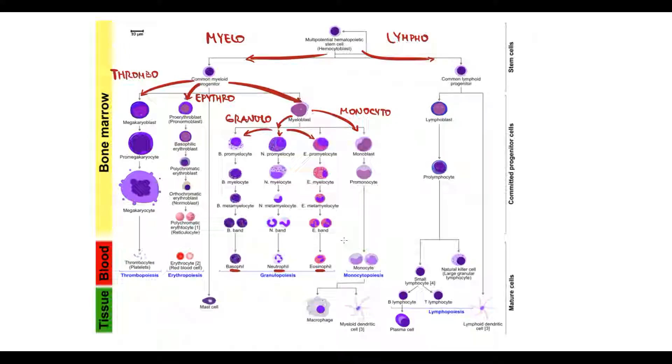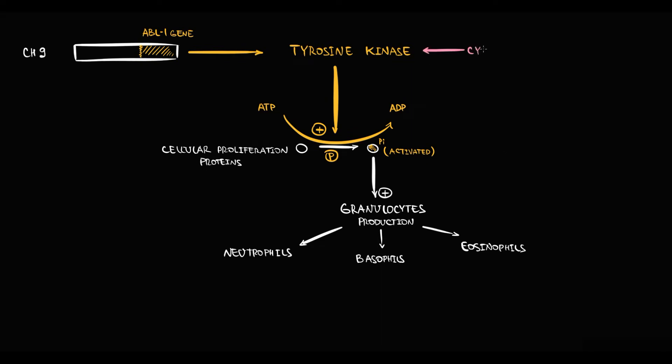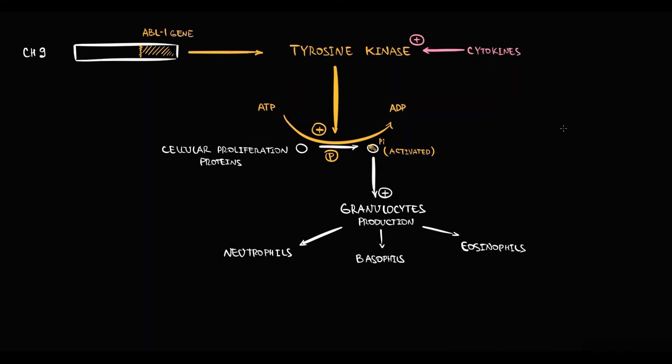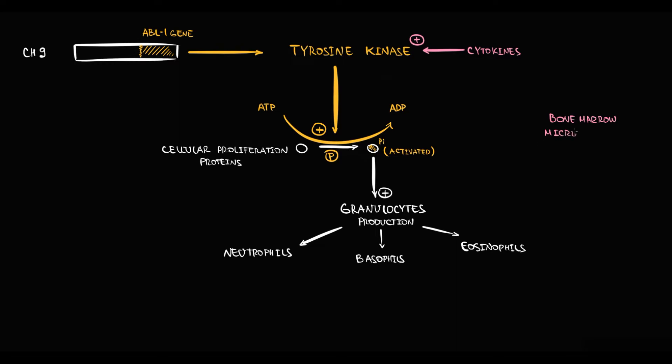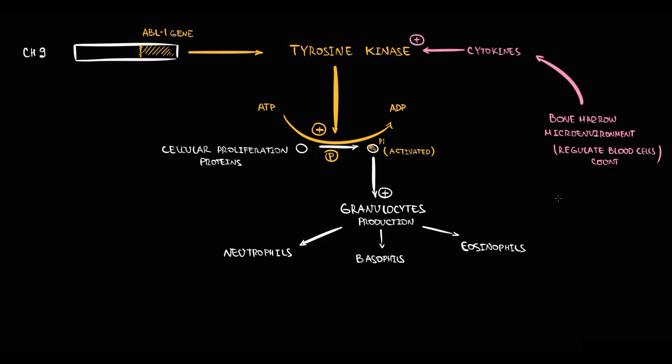The state of tyrosine kinase is regulated by cytokines that are produced mostly by the bone marrow microenvironment. In normal conditions, tyrosine kinase remains passive until it receives signals by cytokines.